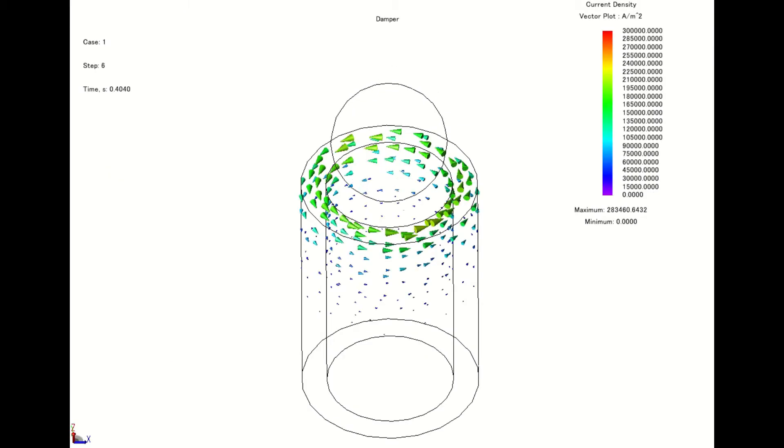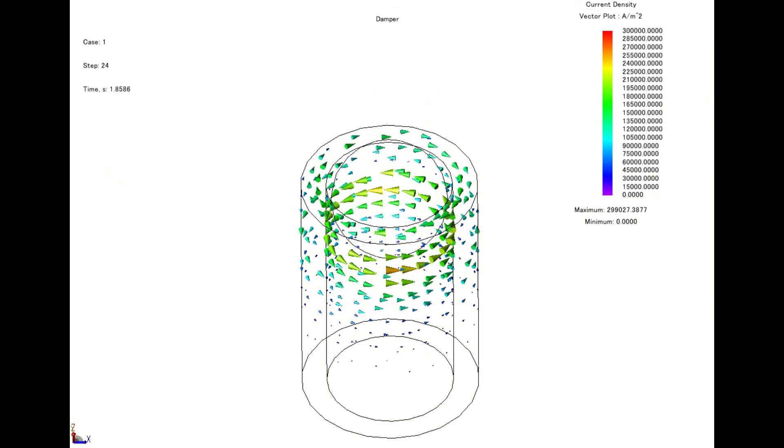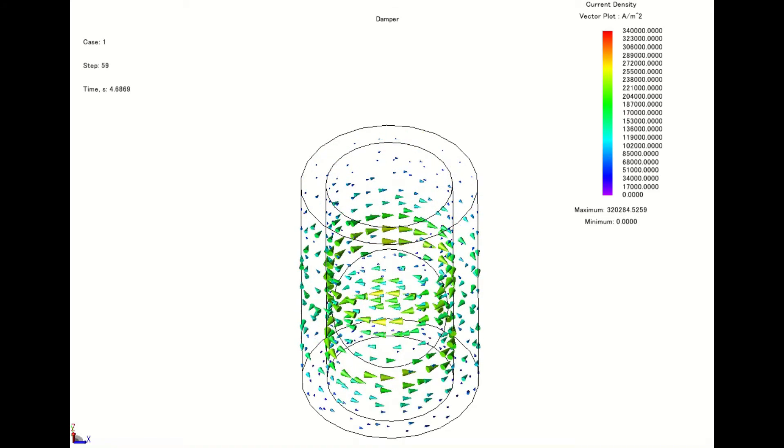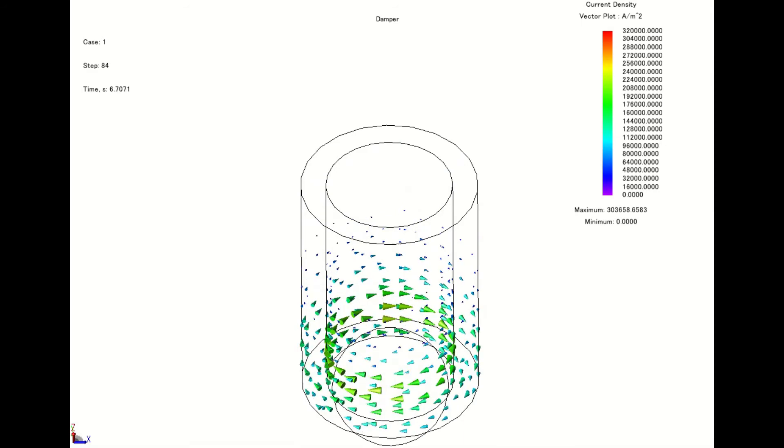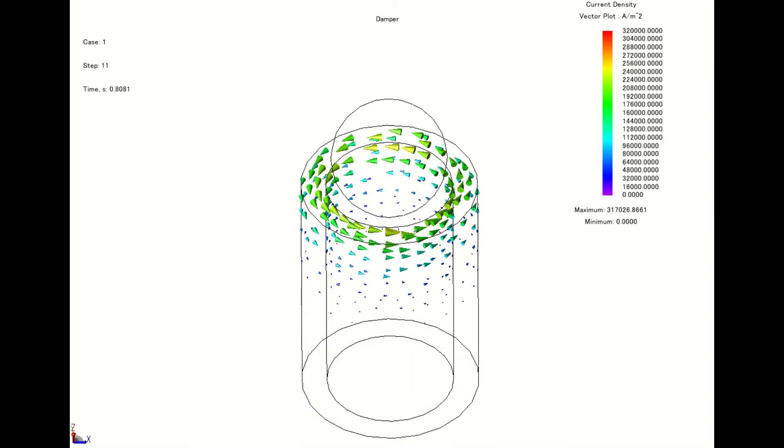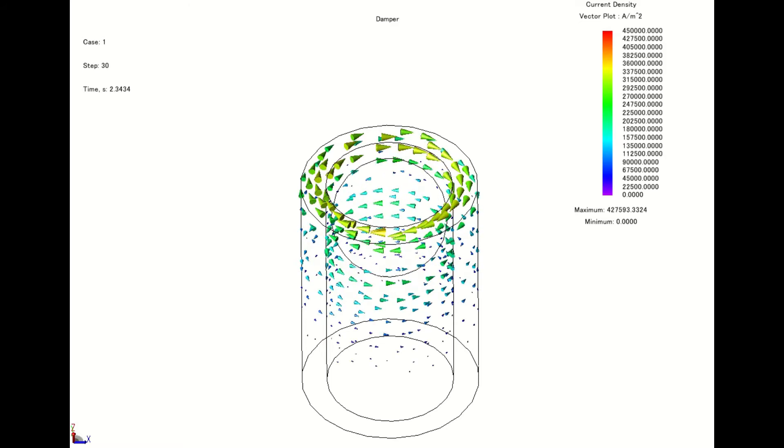Even though it is not possible to see the currents during an experiment, it is possible to see them if we use simulation by finite element analysis. In this simulation, we can see that currents are induced along the copper tube when the permanent magnet falls.